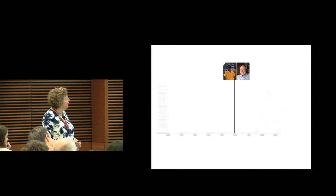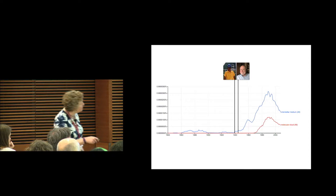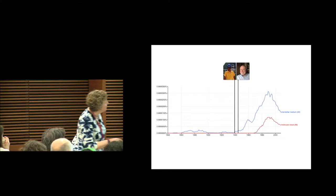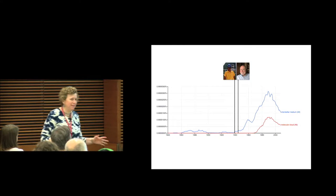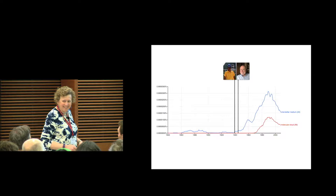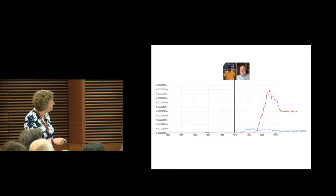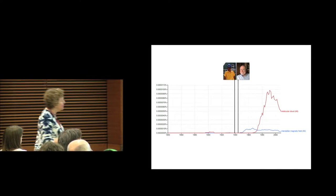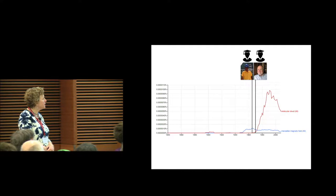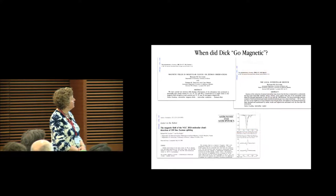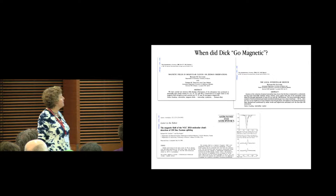Carl and Dick were born significantly after 1840 — in the 1940s zone. Here's 'interstellar medium' as a search term, and here's 'molecular cloud.' What happens around the drop-off is the internet — we all stop using books. But if we change to 'magnetic fields,' the subject dear to many people in this room, it still shows up. Let's let Dick and Carl get their PhDs in the 60s, and see why I'm going to talk more about Carl than about Dick.